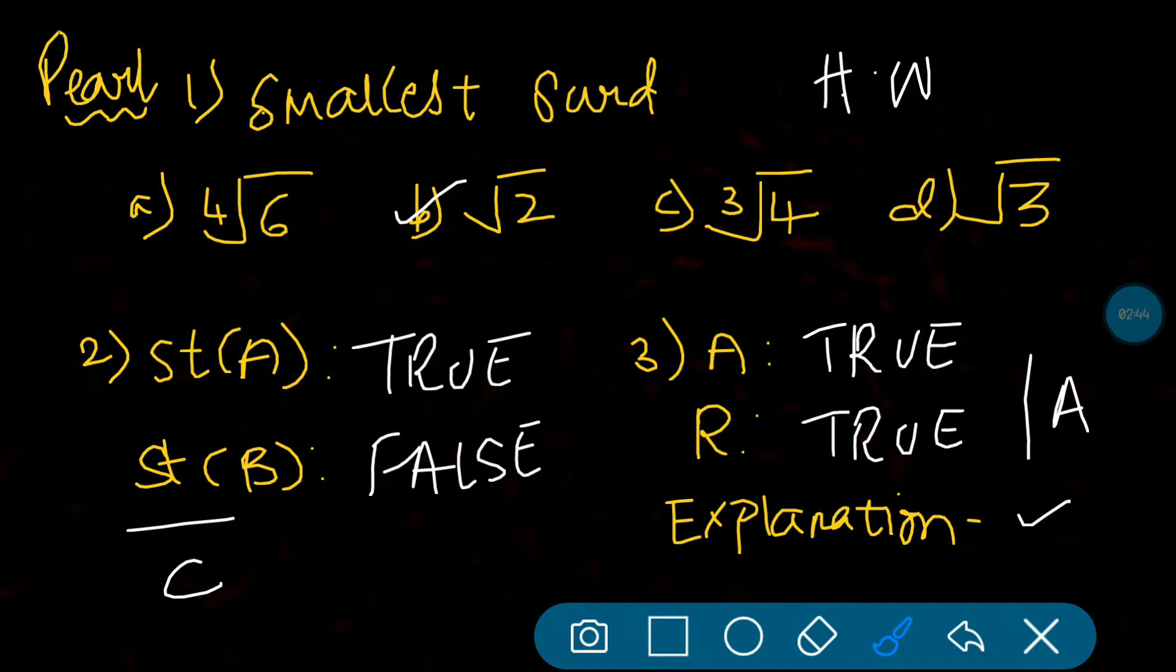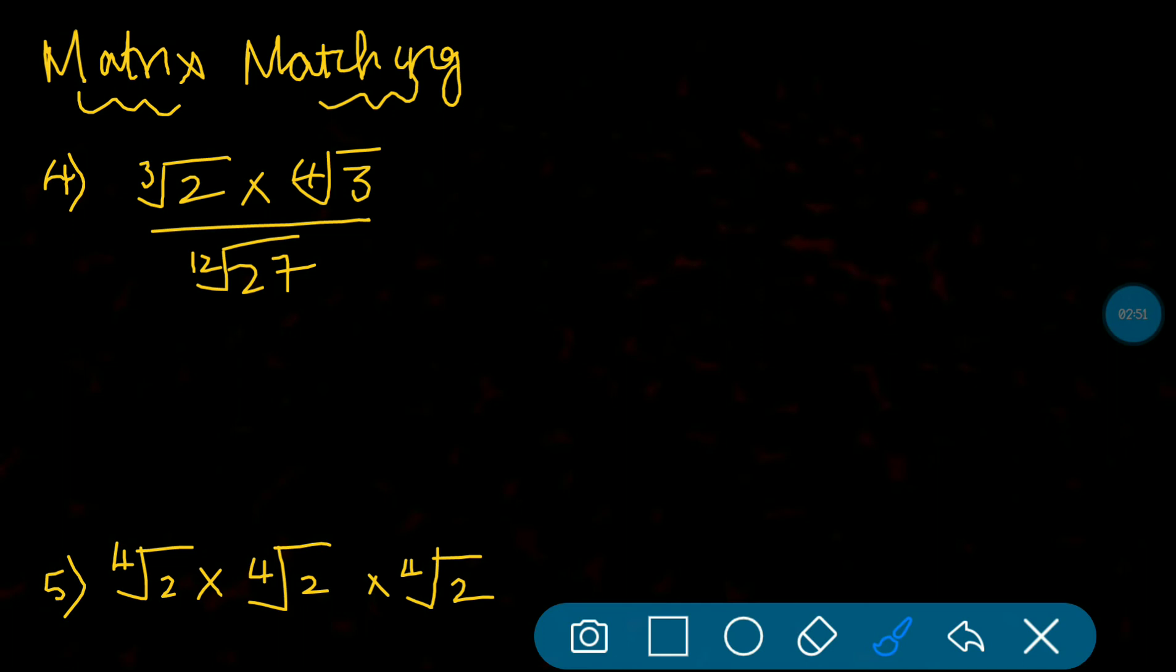Now for questions 1, 2, 3 are done, let's move on to matrix matching. Fourth question is: cube root of 2 multiplied by 4th root of 3 divided by 12th root of 27. When you want to solve this, first and foremost the order must be the same. Below it is 12, and in the top 3 and 4. When you multiply 3 and 4 you get 12. So what we are going to do is take 3 into 4, taking these orders common, and we are going to add a power of 4 to 2 and a power of 3 to 3.